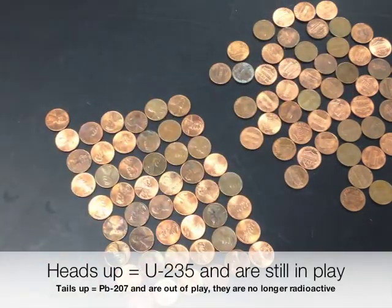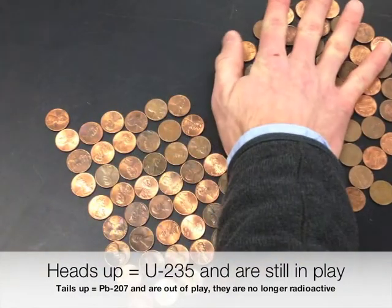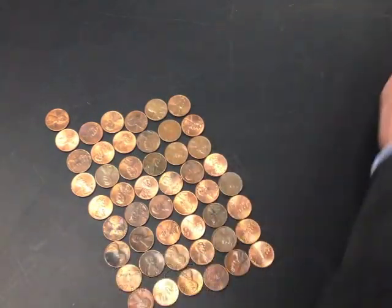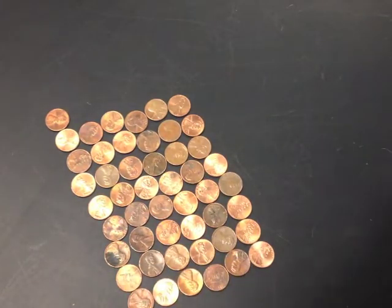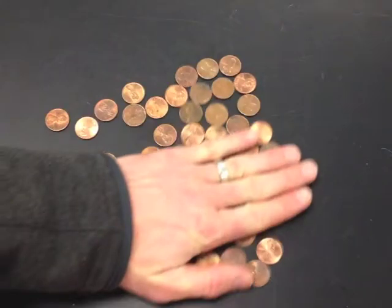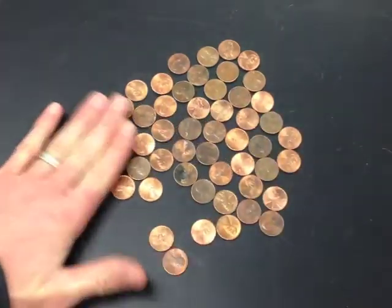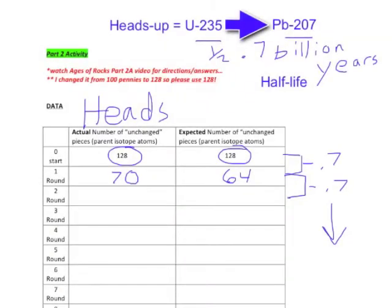The tails-up pennies are now considered the Lead-207 atoms, and those are out of play because they're no longer radioactive — we're no longer considering them for future rounds. Only heads-up pennies will continue on, so place the remaining 70 heads back in the container and discard any of the tails — just put them off to the side.